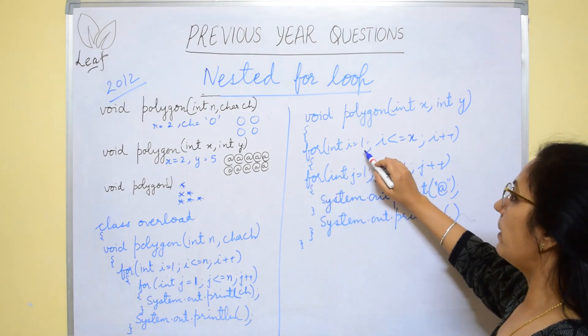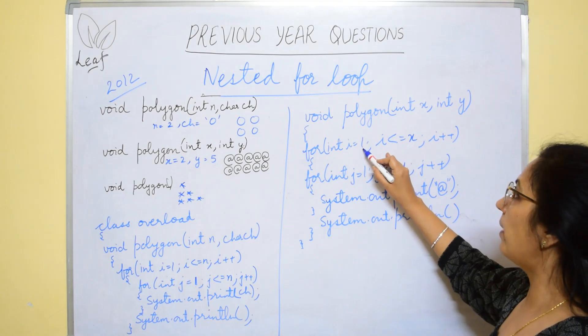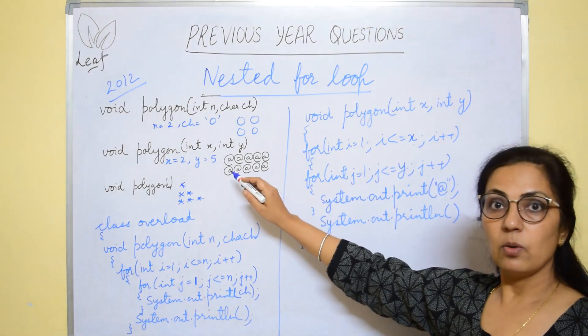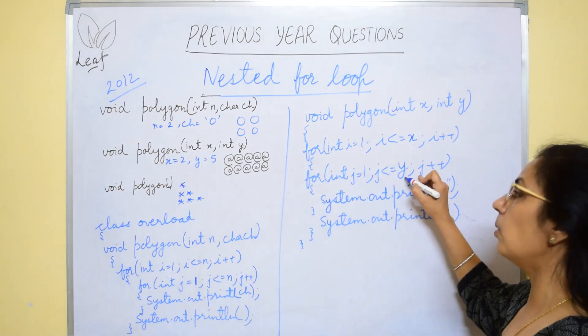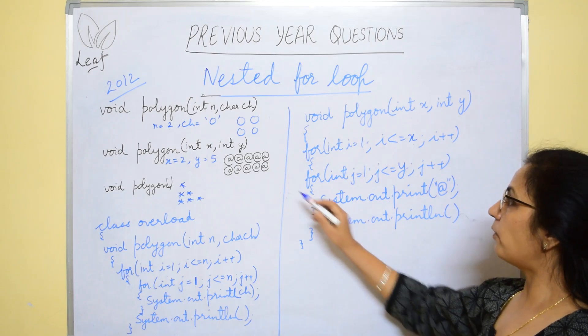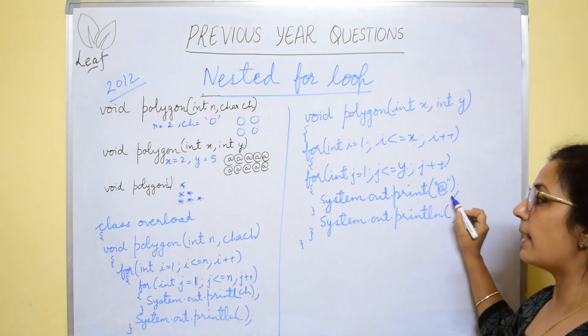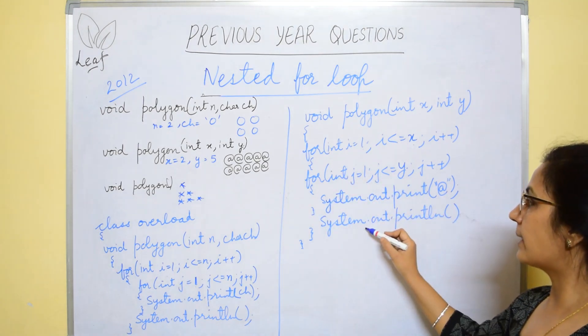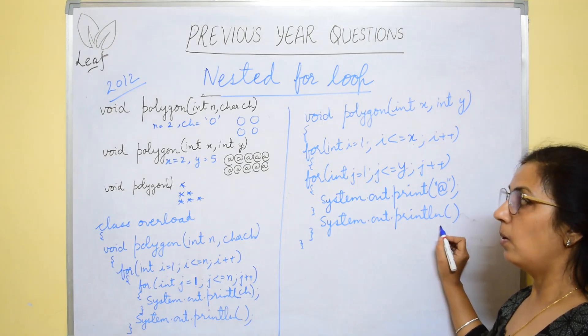We'll take how many rows are there? X number of rows. So, the outer loop will be from 1 to x. How many columns? Y columns. So, the inner loop will be from 1 to y. What you have to display? At the rate symbol. So, print will be with at the rate symbol. Once the inner loop is over, move to the next line using print ln statement.